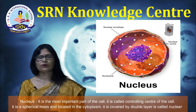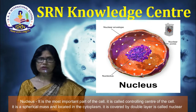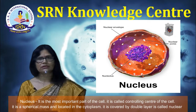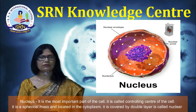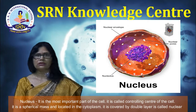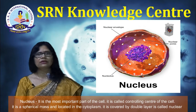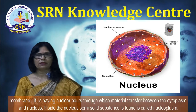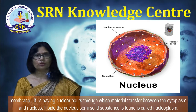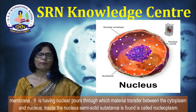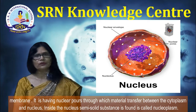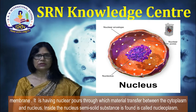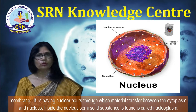Nucleus is the most important part of the cell and is called the controlling center of the cell. It is a spherical mass located in the cytoplasm, covered by a double layer called the nuclear membrane. It has nuclear pores through which material transfers between the cytoplasm and nucleus. Inside the nucleus, a semi-solid substance called nucleoplasm is found.